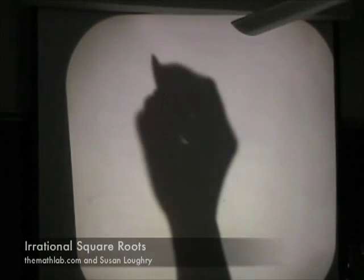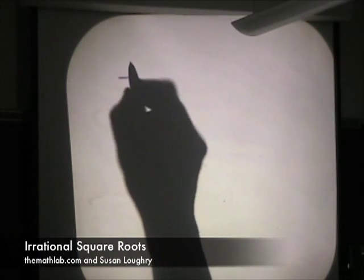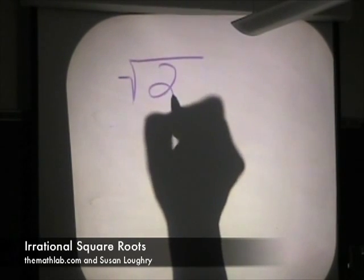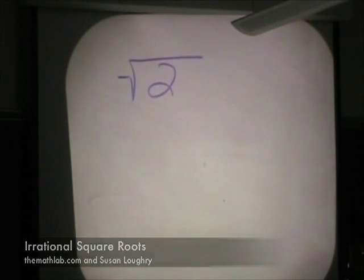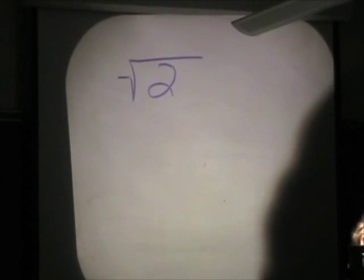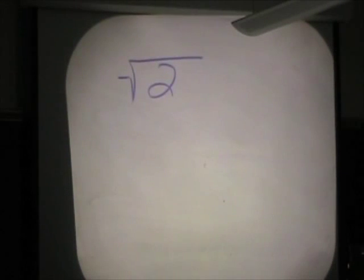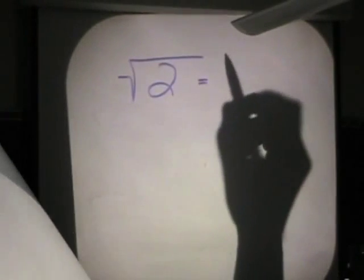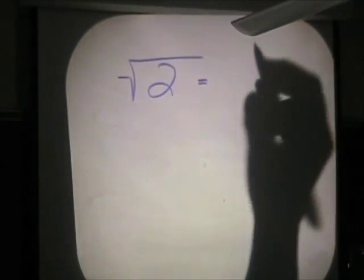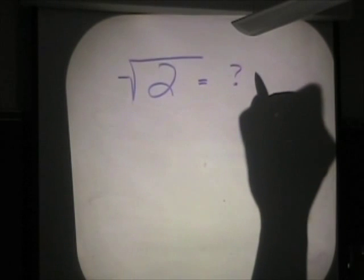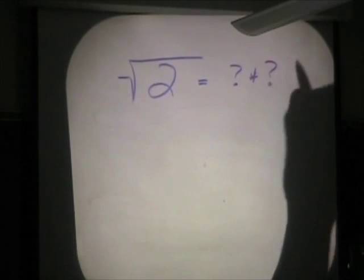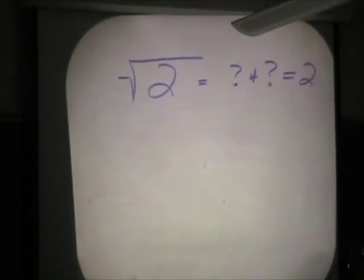And this number right here, this little baby number, square root of 2, killed the most famous Greek mathematician. How did it kill him? I'm going to show you how it killed him. From what I just said, that this symbol right here means what number times itself is equal to 2, right?